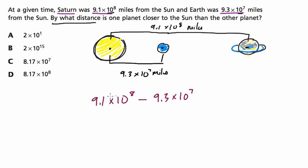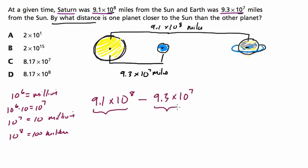Okay, so as a reference point, 10 to the 6th is a million. That's one million. 10 to the 7th is 10 to the 6th times 10. That's 10 to the 7th. So 10 to the 7th is 10 million. It's a million times 10. And 10 to the 8th is that times 10, so it's 100 million. So what we're really dealing with here is 9.100 million, that's the distance to Saturn, minus 9.3, 10 millions, right? So that's a little confusing to think about. Think about it this way.